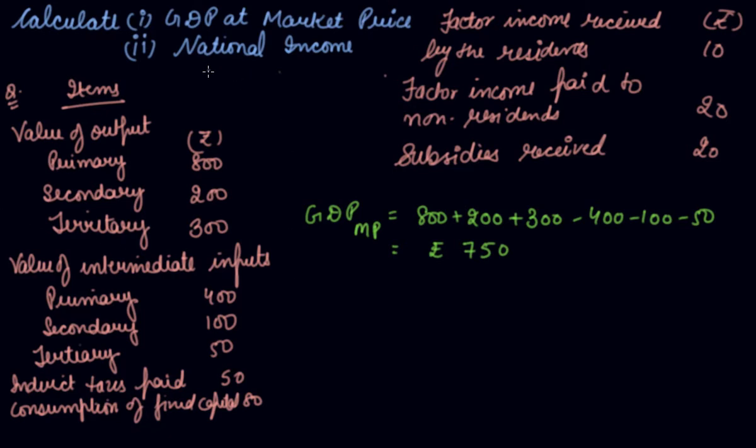Now, you have to calculate your national income, that is NNP at FC. From GDP at MP, we first calculate the NDP at MP by subtracting the depreciation from GDP at MP. Where is the depreciation? The consumption of fixed capital. I told you the other name of depreciation. So, we get 670 as the answer.